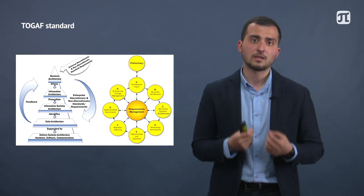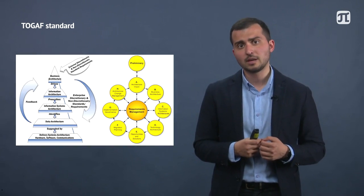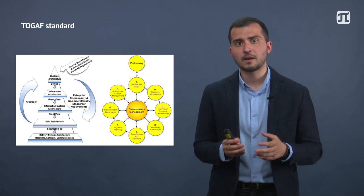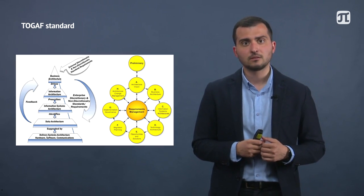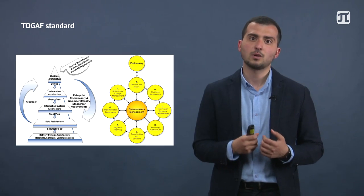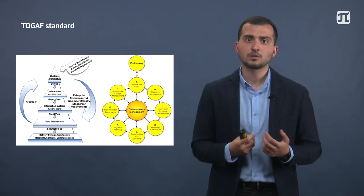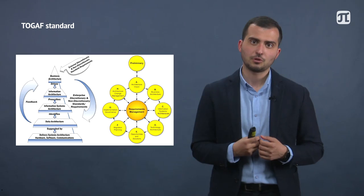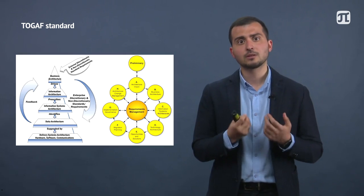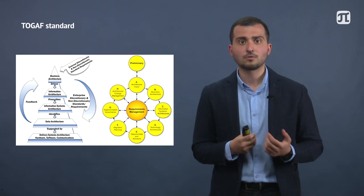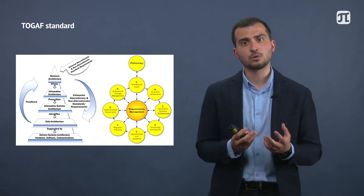Here is the TOGAF standard structure, one of the modern representations of EA. It has two baseline elements: the EA structure on the left, and the Architecture Development Method, or ADM, on the right. The EA structure has five levels. The top one is business architecture, which defines requirements and drives information architecture. This information architecture has to be supported by software, which is information systems architecture. This defines the data requirements, and further specific software and hardware. ADM supports analysis of the current state of architecture and its development, with a number of steps which are all interrelated with requirements management.